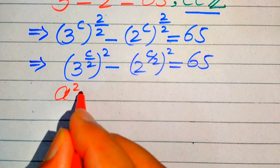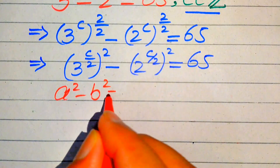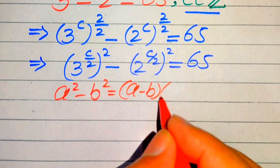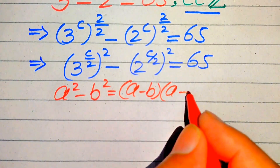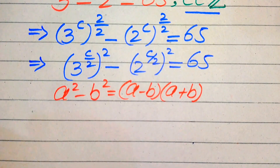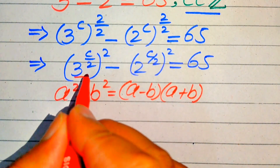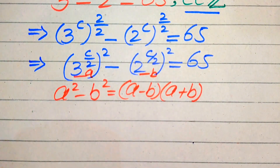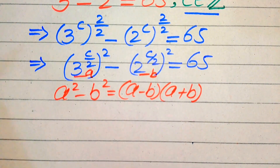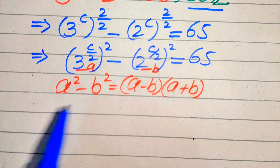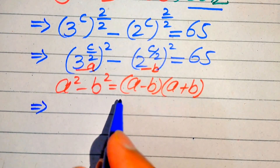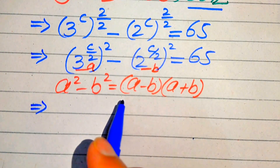Here we use the algebraic formula: a squared minus b squared equals a minus b times a plus b. The base of the first term is our a and the base of the second term is our b. According to this algebraic formula, we write the above expression in this factored form.